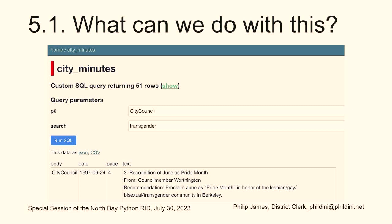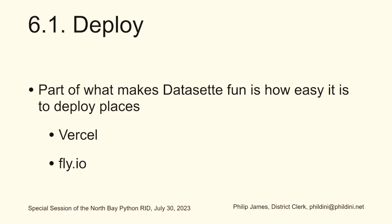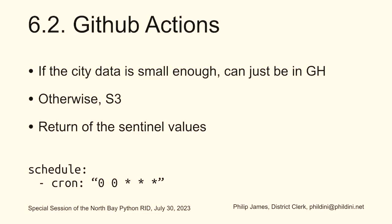Deploying is part of what makes Dataset fun. There are two very easy deploy targets right now: Vercel and Fly.io. It is literally one line — you give it your login credentials, do one line for the deploy, and you are done. We can hook this into GitHub Actions very easily. If the city data is small enough, you can put all the city data into GitHub. If not, you can put it into S3, and you're doing increments rather than the full set. My pipeline is to do the full set on my machine and then run the GitHub Action to do the increments over time, storing them in S3. You can schedule GitHub Actions as a cron — this one runs every hour.